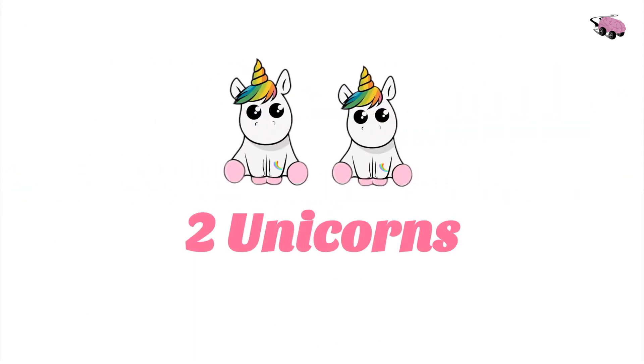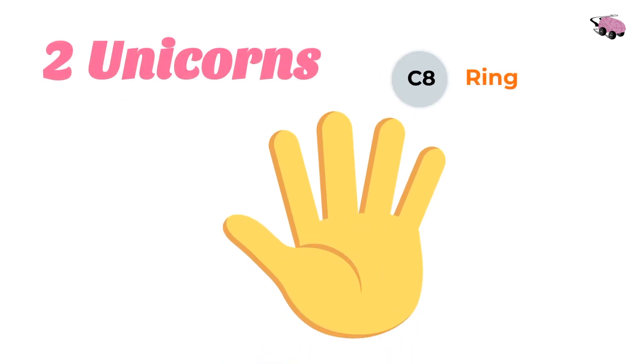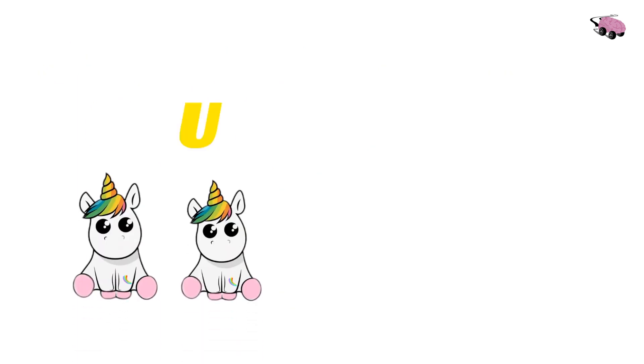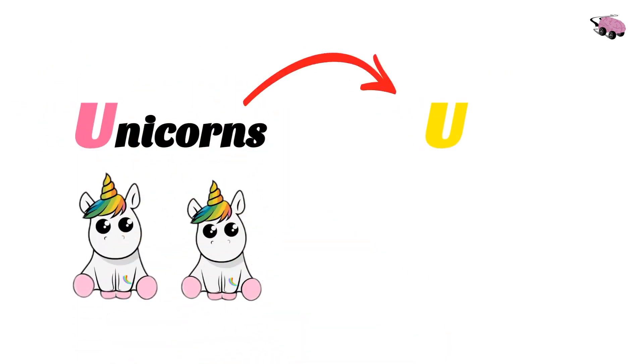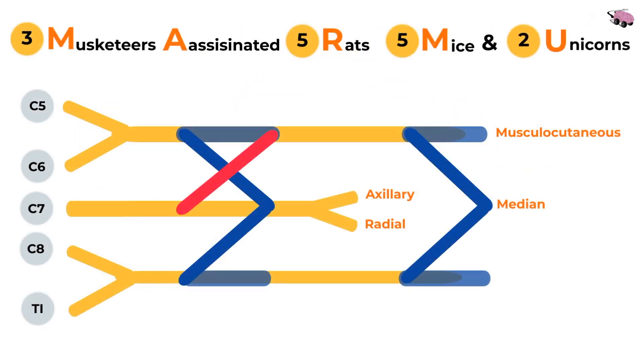Three musketeers assassinated five rats, five mice, and two unicorns. Two is for the last two fingers left: ring C8 and pinky T1. Two unicorns. The U in unicorn stands for ulnar nerve. Great job! Our last nerve for today is labeled.